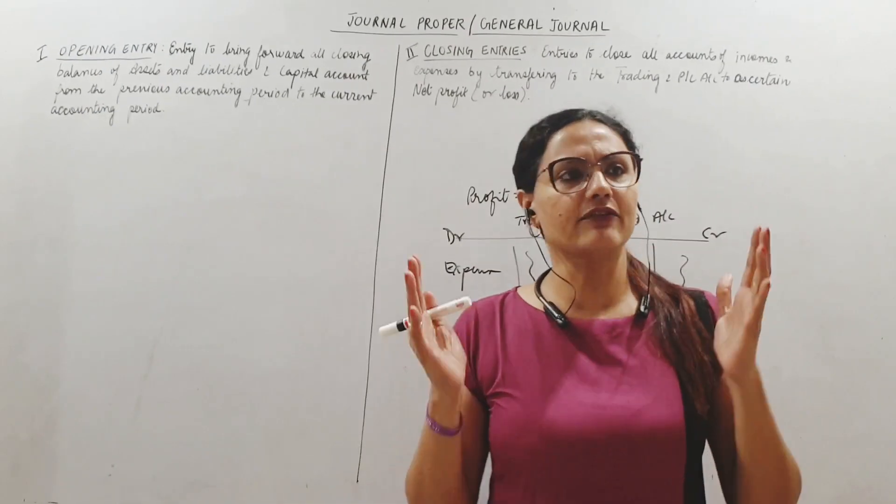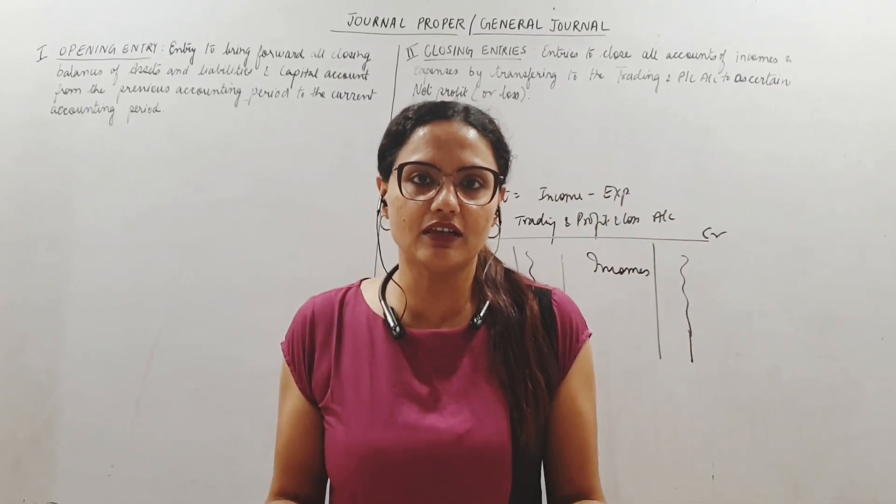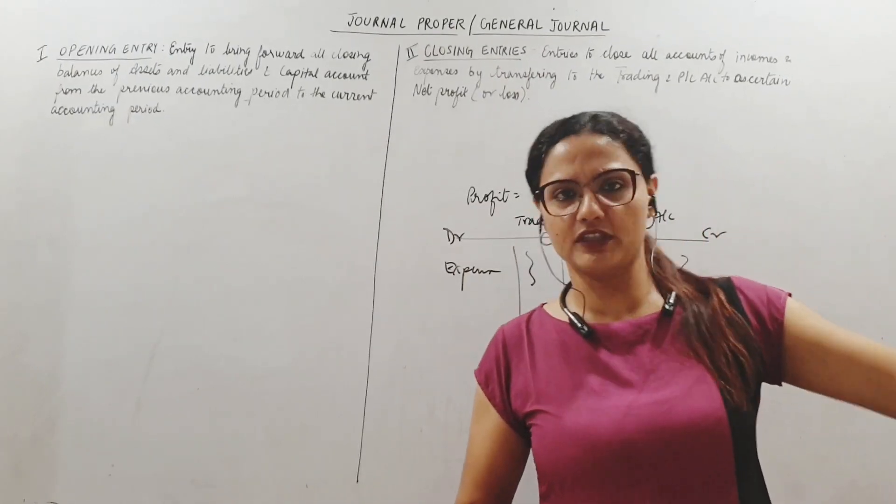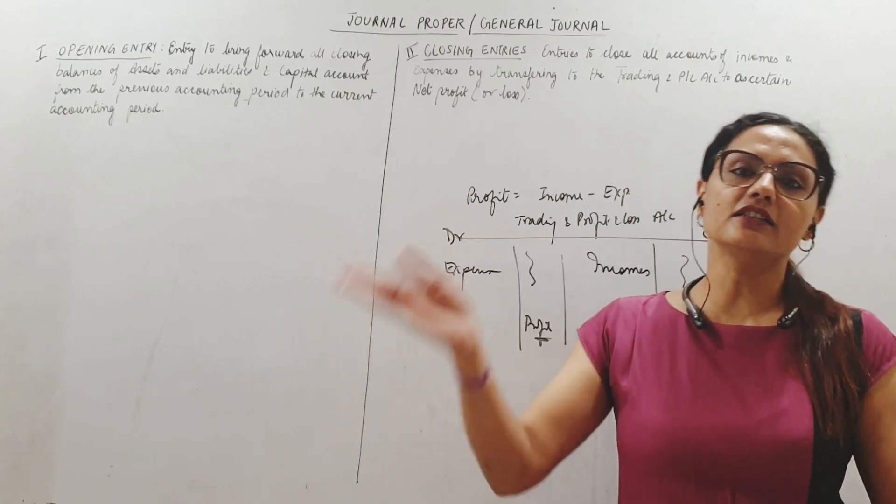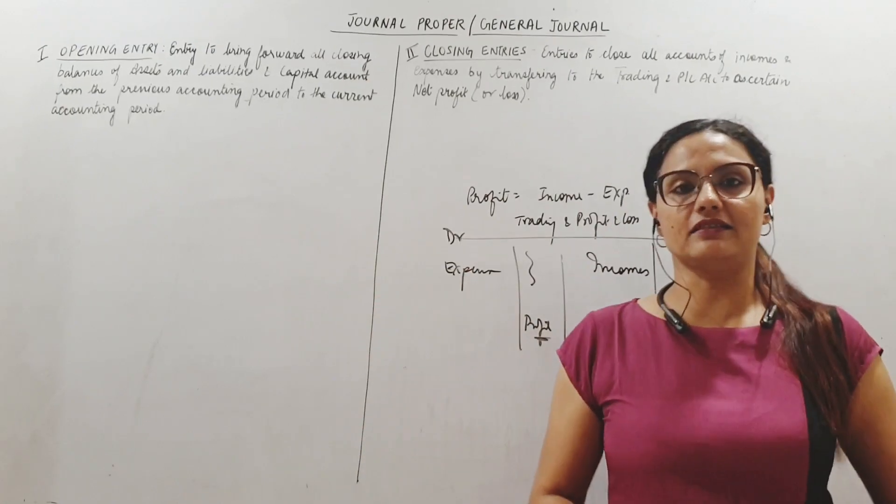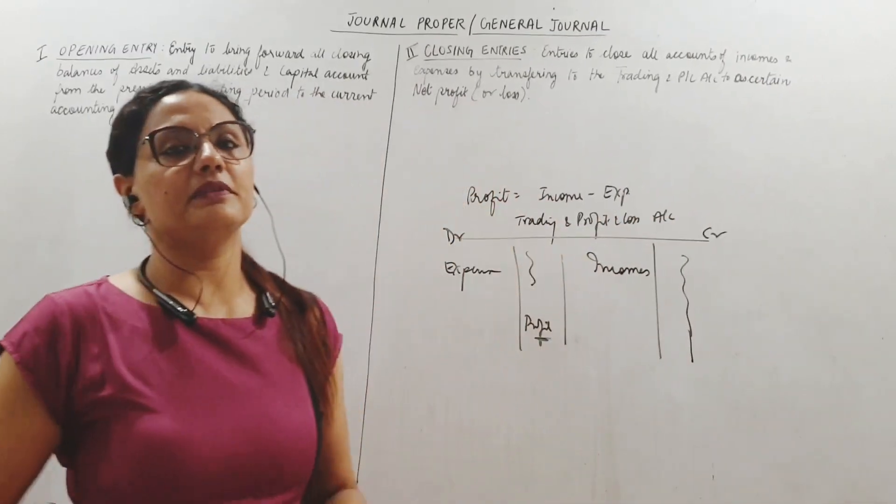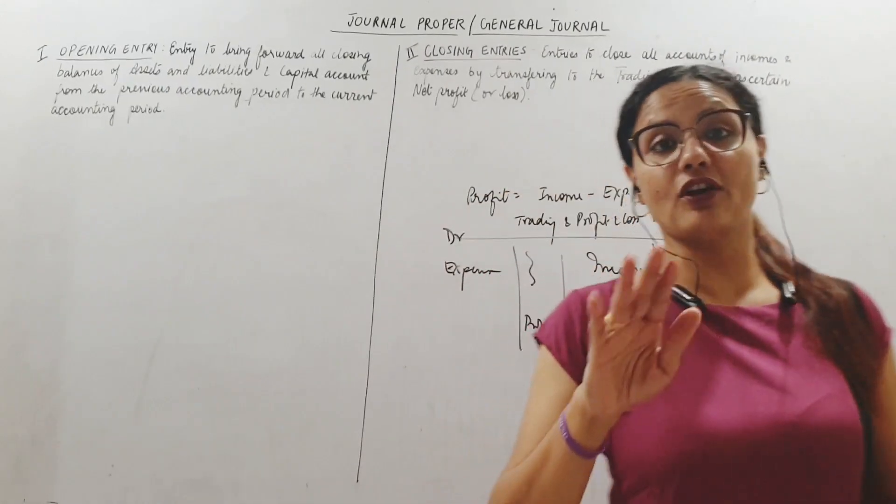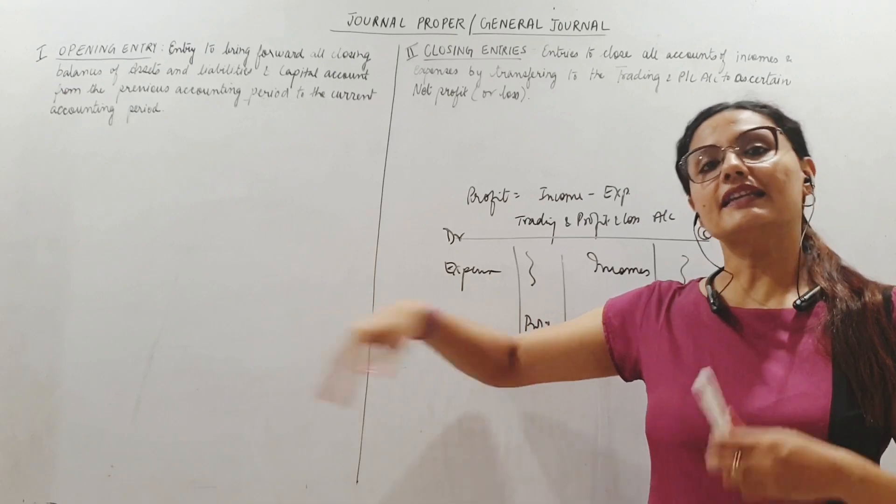Assets will not finish. If I have furniture worth one lakh, will it get exhausted at the end of the year? No, that is a fixed asset. So that will be useful in the next year also. These assets, liabilities, and capital balances you carry forward to the next year also, because next year they are still my assets, liabilities, and capital. I cannot close them every year. They carry over.